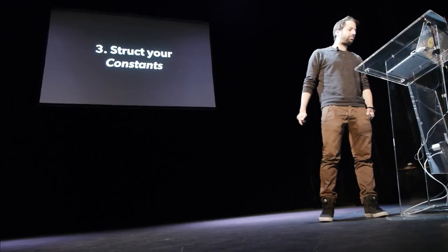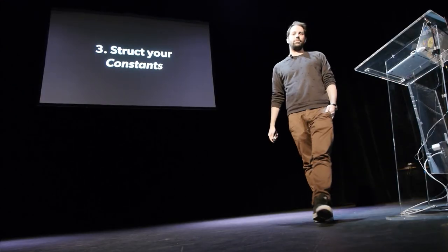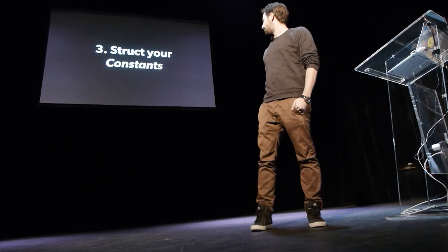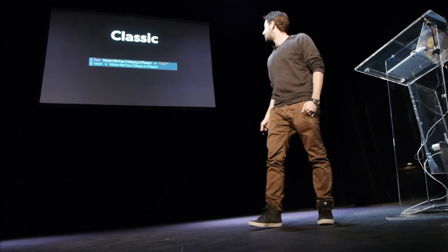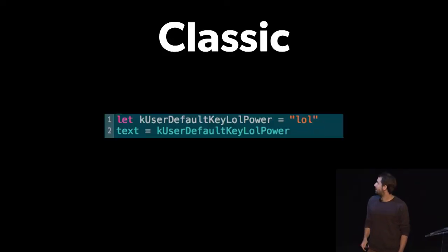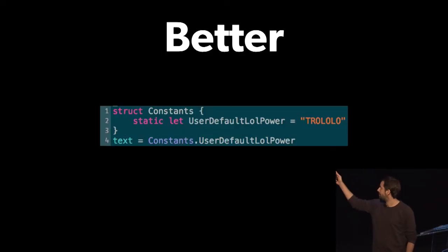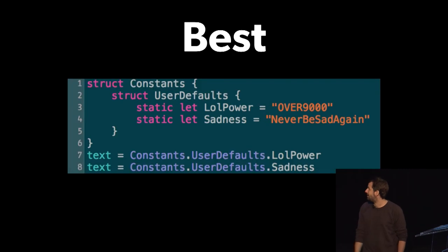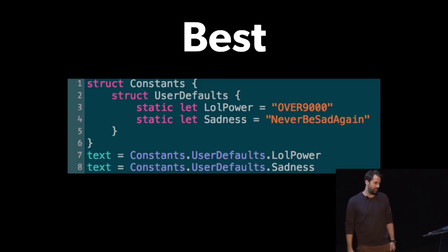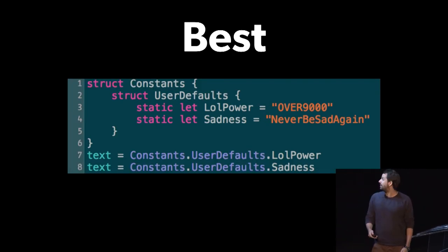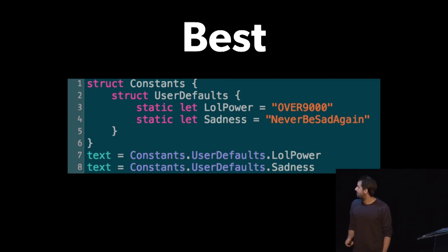The third tip is to struct your constants — just a quick tip. This was the classic way, this is the better way, and this is the best way. You can do this and say goodbye to Objective-C's ugly constants.